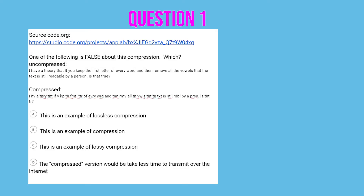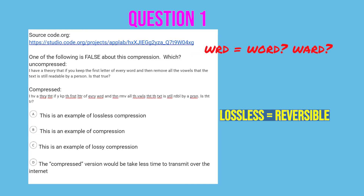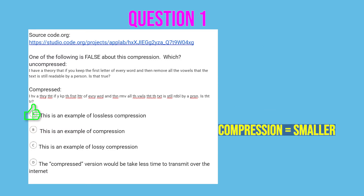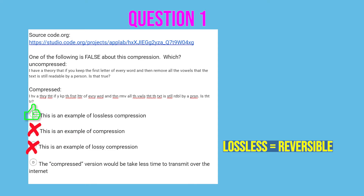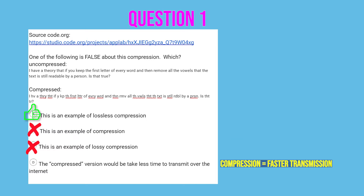This question comes from code.org and it basically takes out all the vowels from a text message. For answer A, we use the concept that lossless equals reversible. Is this lossless? Well, 'WRD' — is that 'word' or 'ward'? You cannot be 100% sure, so it's lossy. That makes A false, and since we're looking for the false statement, A is the answer. For B, compression does make things smaller, so B is true. C is the opposite of A — also true. For D, compression means faster internet transmission, so D is also true. The answer is A because A is false and we're looking for the one that's false.